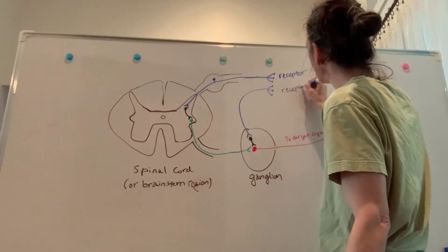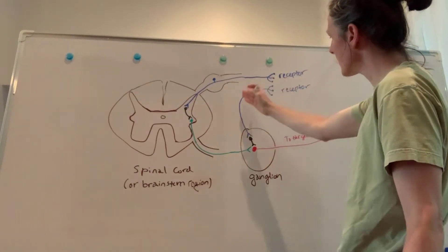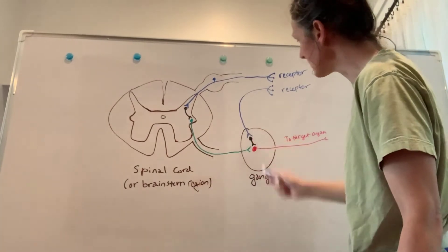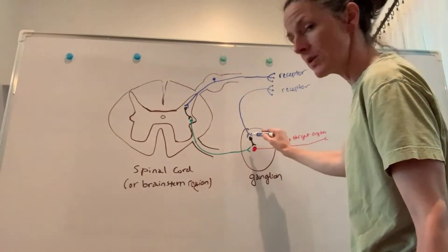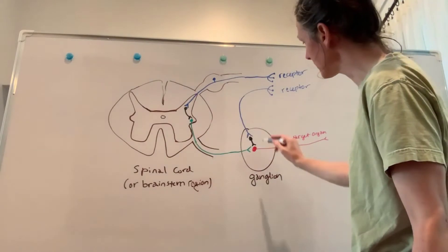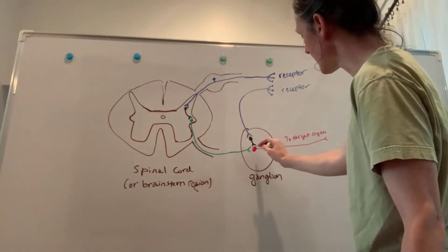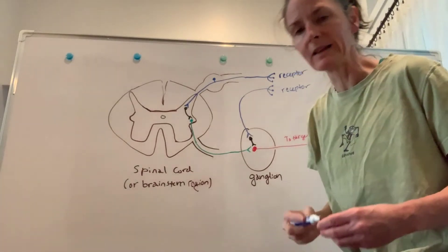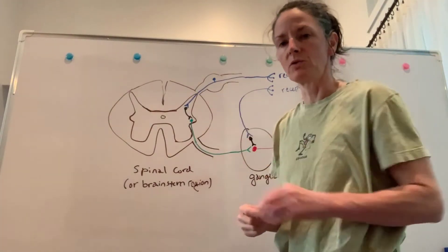In a short reflex, we still have a receptor and an afferent, but the afferent goes directly into an autonomic ganglion and synapses on an interneuron there, which then synapses on the ganglionic neuron whose postganglionic axon goes out to the target.